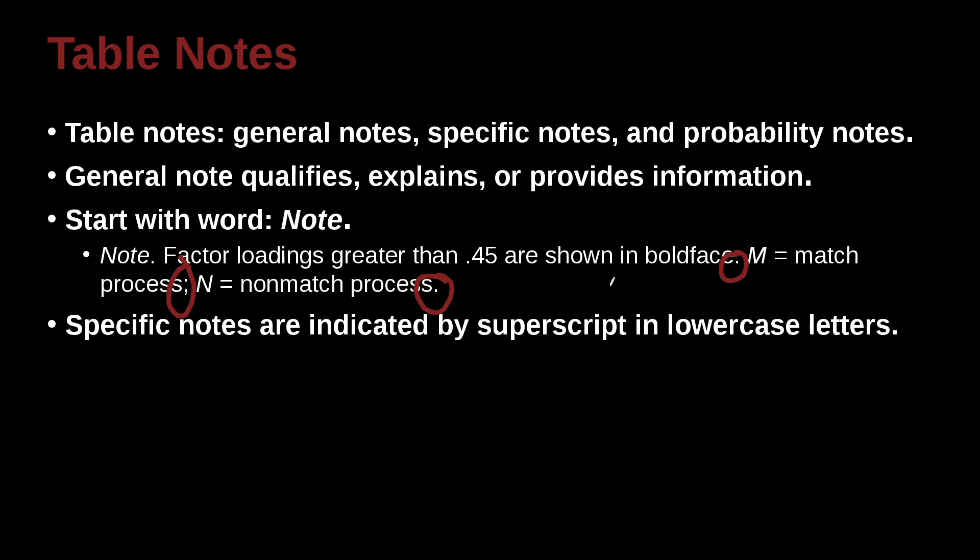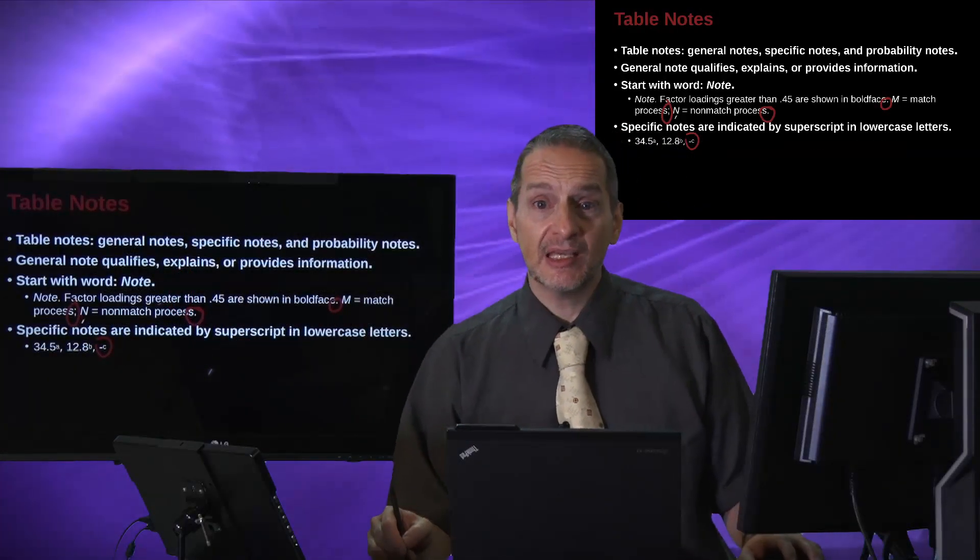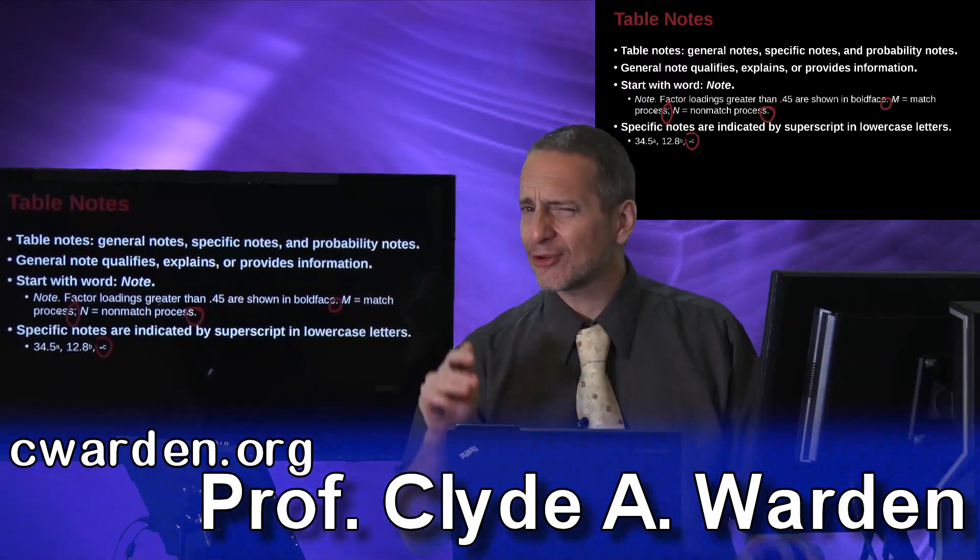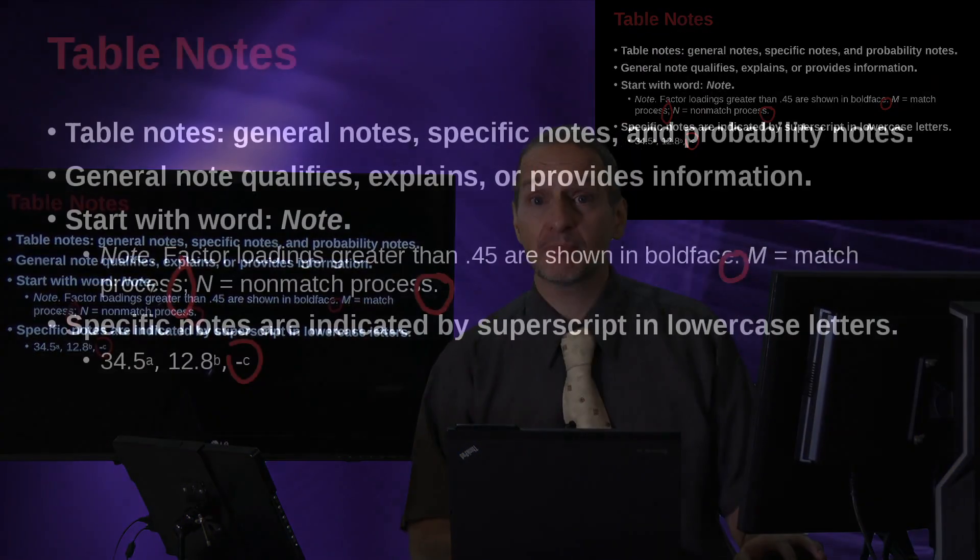Specific notes are indicated by superscript in lowercase letters, and superscript meaning that you put it up inside your table like this. So 34.5 with that little A up there, or 12.8 with that little B up there, or here we have a little dash and then a C. What does this dash mean? Why is this data empty? And so we look at the bottom of the table where the note is, and we say what does A mean, what does B mean, what does C mean. We put all of that into the note. Another great way to save a lot of space in your table.